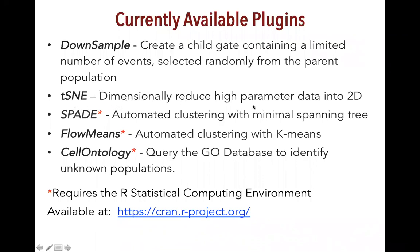The workflow: we take each sample, add gates, downsample to a specified number of events on a certain gate, and then merge those together using concatenation. Then we run t-SNE and pull apart each of the individual samples from that concatenated file to examine them. The other plugins — SPADE, FlowMeans, and Cell Ontology — are useful downstream of t-SNE: SPADE for clustering, Cell Ontology for querying unknown phenotypes.